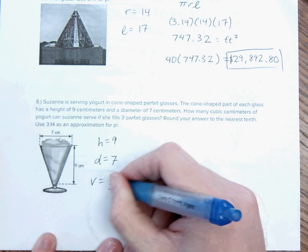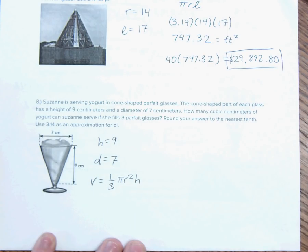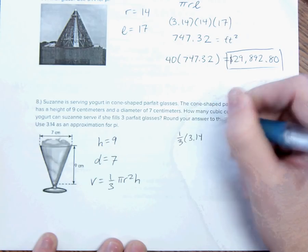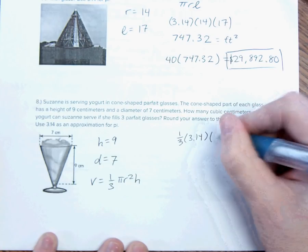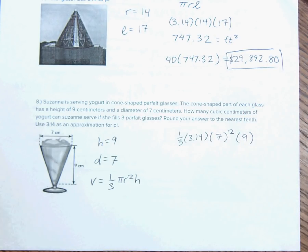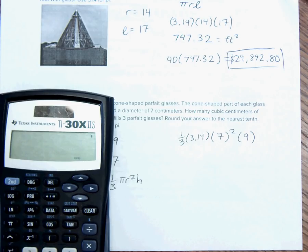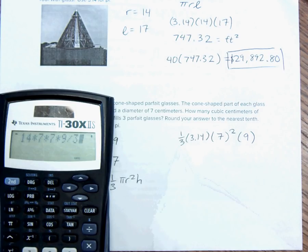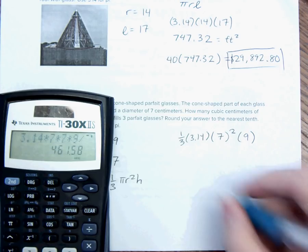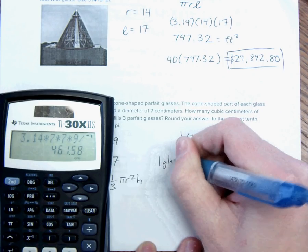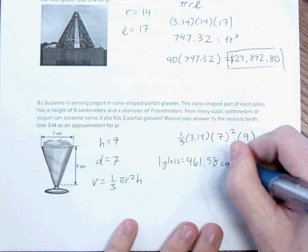So, remember volume equals one-third pi r squared times the height. So, we are going to do one-third times 3.14 times r squared times the height, which is 9. And I can throw all that in at one time. I actually started pi at 3.14 times 7 squared. 7 times 7 times 9. And then I'm going to divide by 3. So, instead of multiplying by one-third, I'm just going to divide by 3 because it's essentially the exact same thing. And I get one glass has a volume of 461.58. So, this is one glass centimeters cubed.